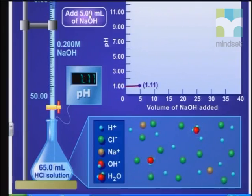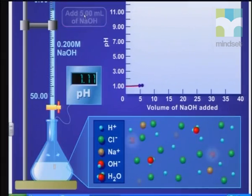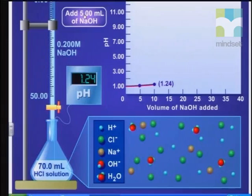If you look carefully at the right, you can see a little bit of water being formed. The brown molecules are the Na⁺ ions. We're going to add another five mils. We're now getting more Na⁺ ions. The pH, if you look on your screen, is now 1.24. The pH is increasing — I'm adding a base.